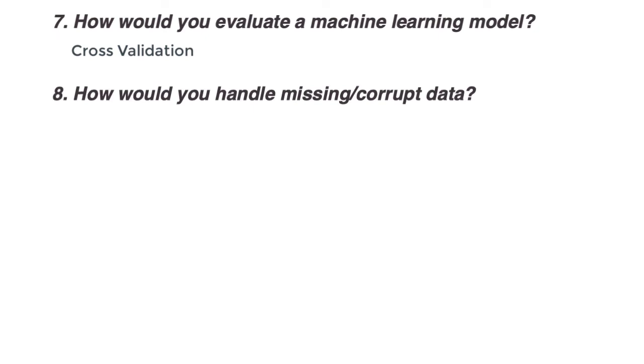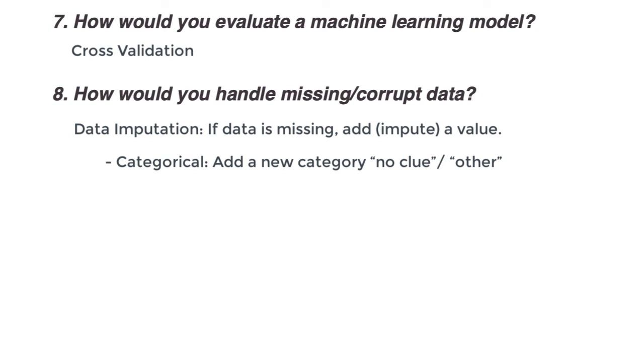How do you handle missing or corrupt data in a dataset? To deal with missing values, we could perform data imputation. The big idea is that if there is data that is missing, you add a value. But that data can be of different types. For categorical values, you can add a new category like no clue or other. For numeric types, you can impute with zero and add an indicator variable showing that the value is missing. The model will compute it for you.